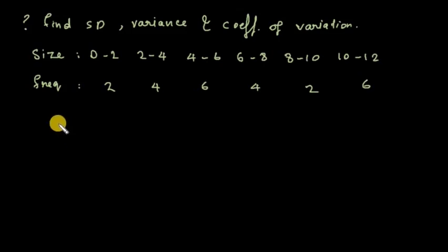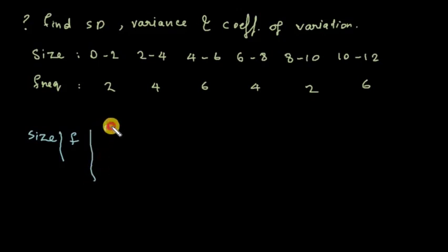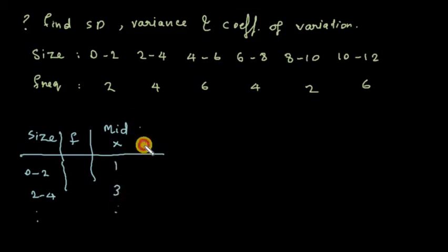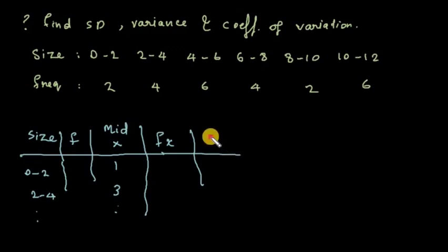We set up a table with columns for size, frequency, mid of size (x), fx, x², and fx². The size classes go from 0 to 2, 2 to 4, and so on, with midpoints 1, 3, and so on.